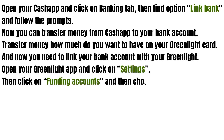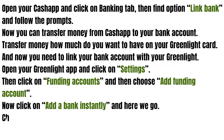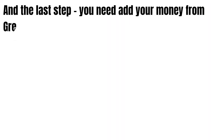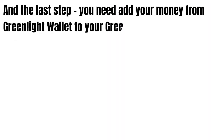Now you need to link your bank account with your Greenlight. Open your Greenlight App and click on Settings, then click on Funding Accounts and choose Add Funding Account. Now click on Add a Bank Instantly, choose a bank, enter your credentials, and follow the prompts. The last step is to add money from your Greenlight Wallet to your Greenlight Card.